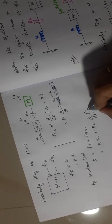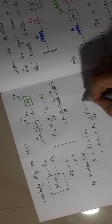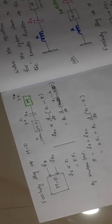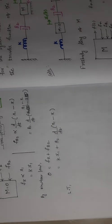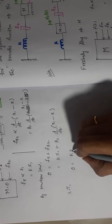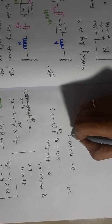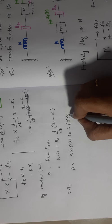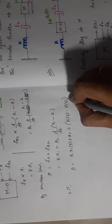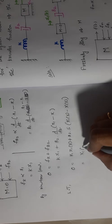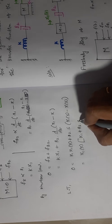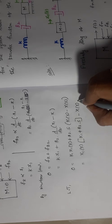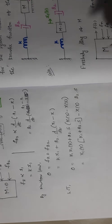Taking the Laplace transform of the M equal to 0 equation: 0 = K·X1(S) + B2·S·[X1(S) − X(S)]. Taking X1(S) commonly outside, the remaining terms give: X1(S)·[K + B2S] − X(S)·B2S.